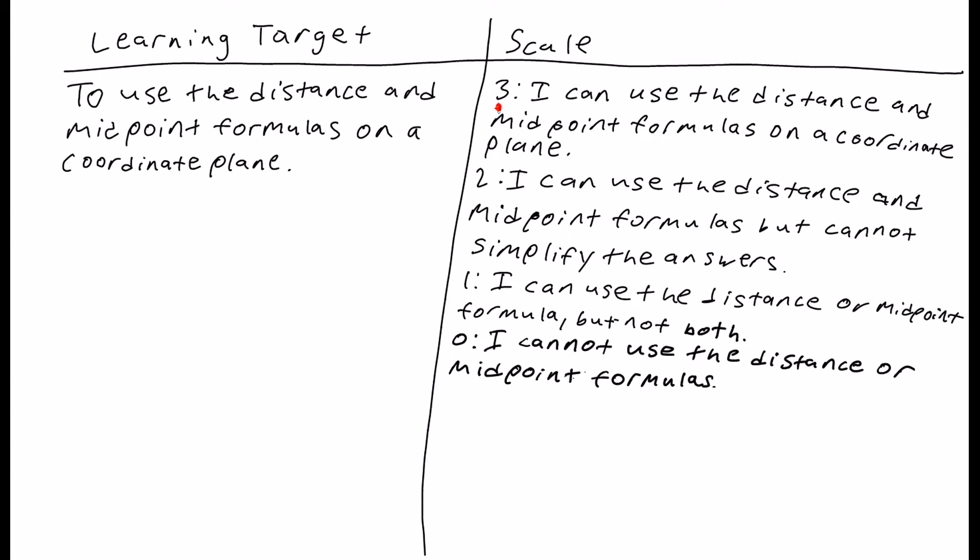For a scale, you're a 3 if you can use the distance and midpoint formulas on a coordinate plane. A 2, you can use the distance and midpoint formulas but you can't simplify the answers.